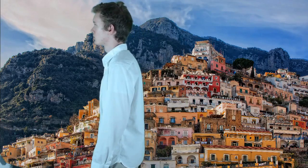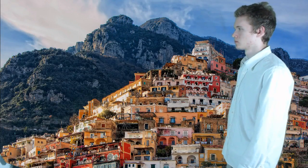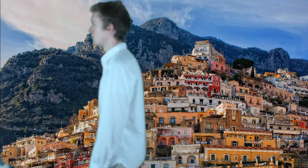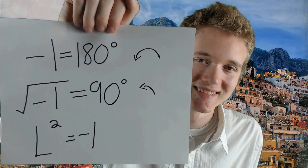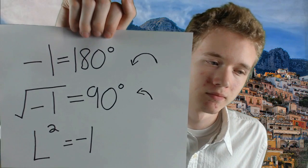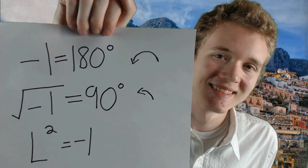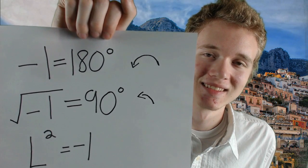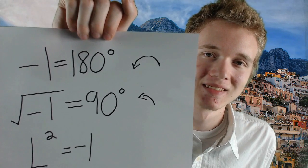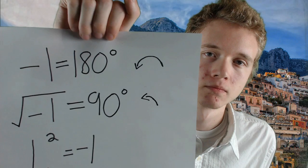Looking at that last exercise, if an object was 3 steps forward and 2 steps to your left, you can walk 3 steps forward, turn 90 degrees, and walk 2 more steps. That turn to your left is represented by L, the square root of negative 1. Since a negative sign means turn 180 degrees, you need to turn less than that, so you can simply turn 90 degrees, or the square root of negative 1.